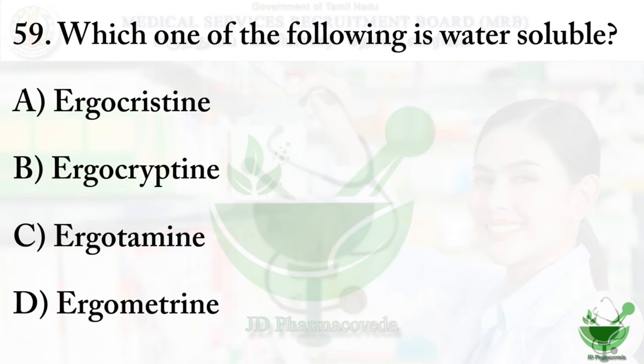Question number 59: Which one of the following is water-soluble? The options are: option A, Ergocrystine; option B, Ergocryptine; option C, Ergotamine; and option D, Ergometrine. The right option is option D, Ergometrine.